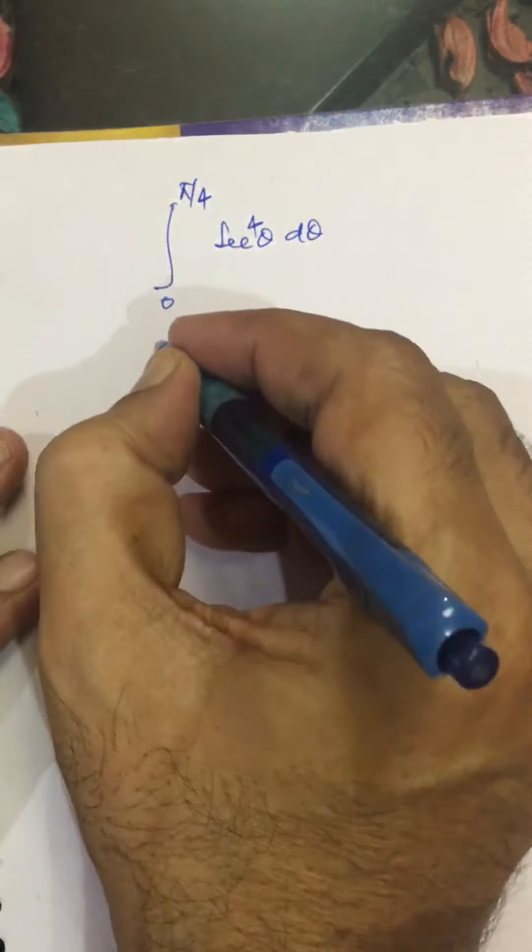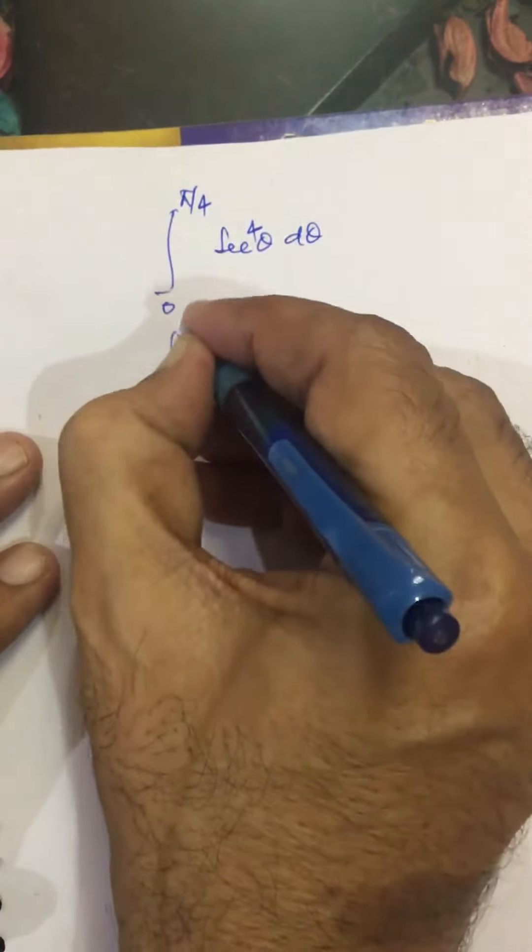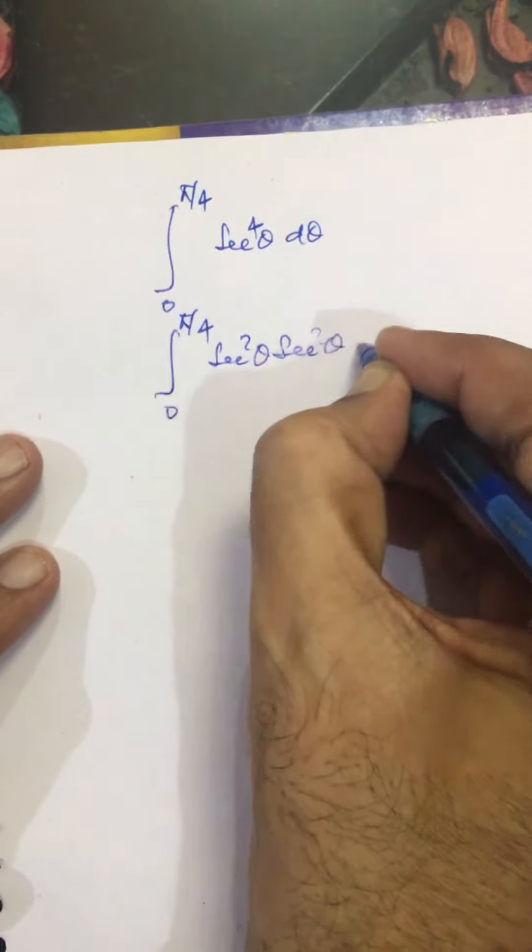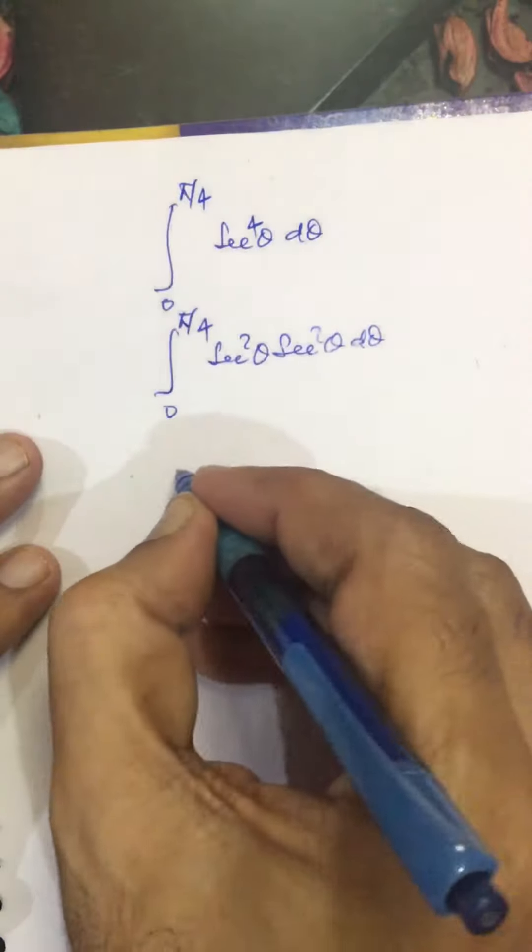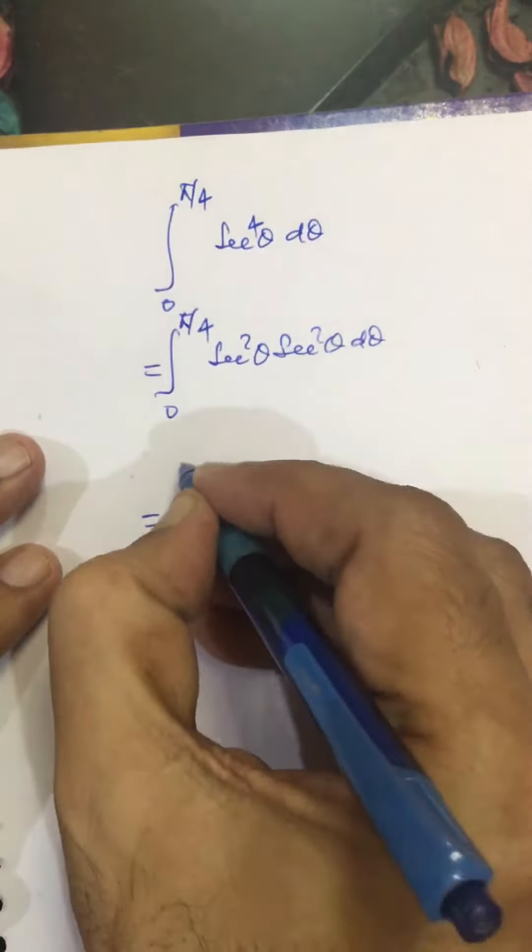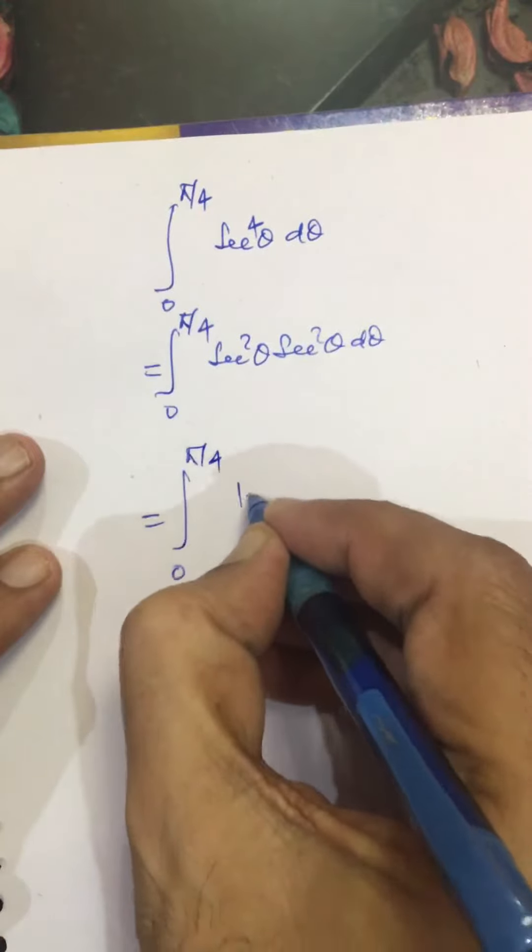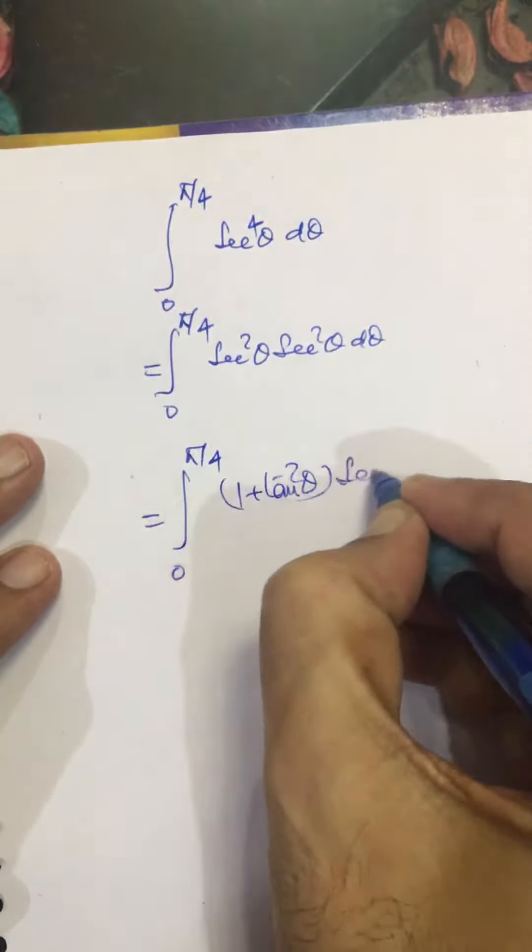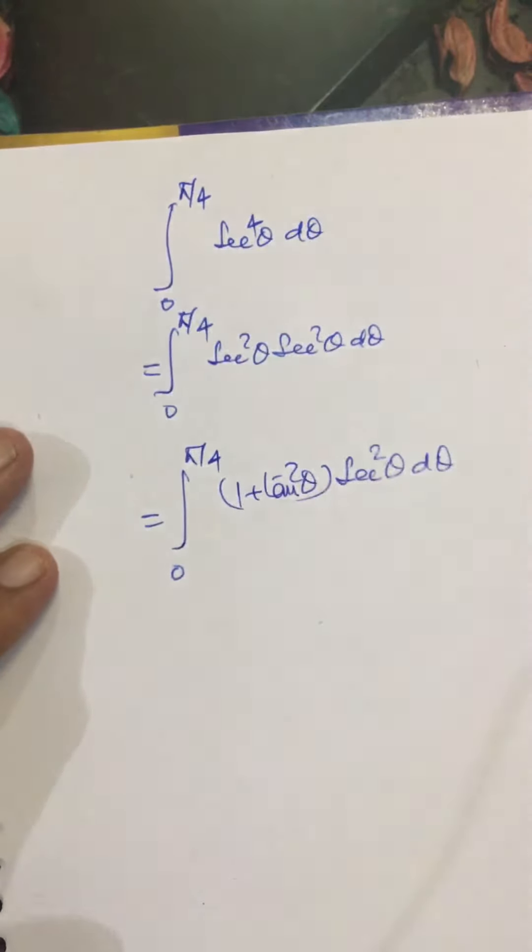We can proceed like this to evaluate this integral from 0 to pi by 4: sec square theta times sec square theta d theta. This we can further simplify as 1 plus tan square theta times sec square theta d theta.